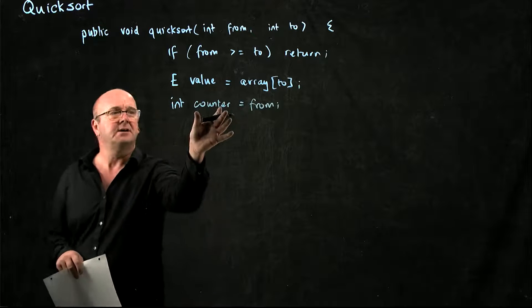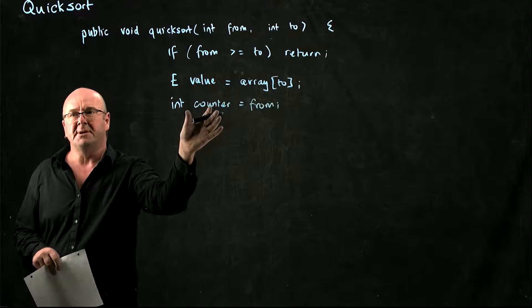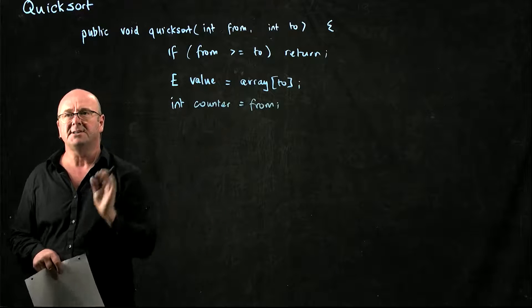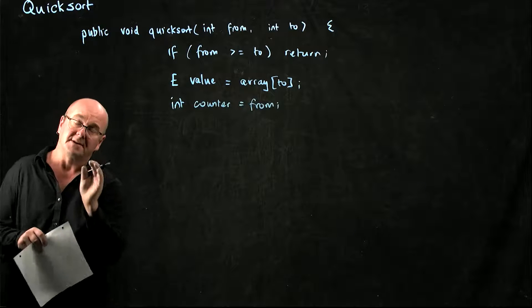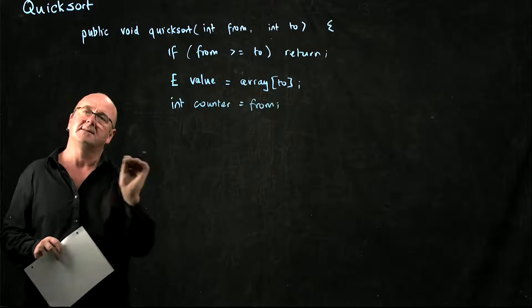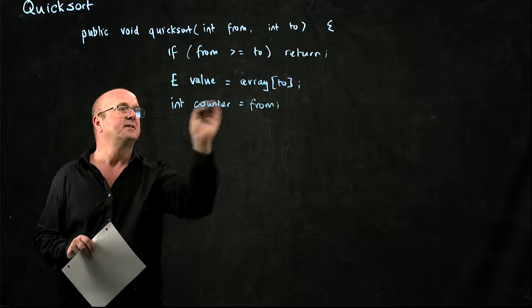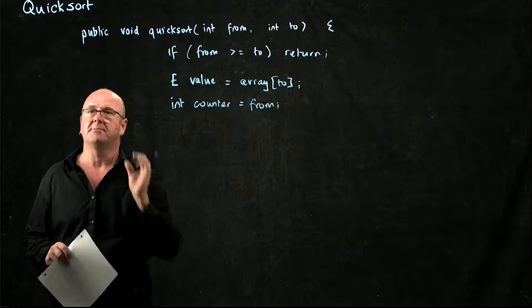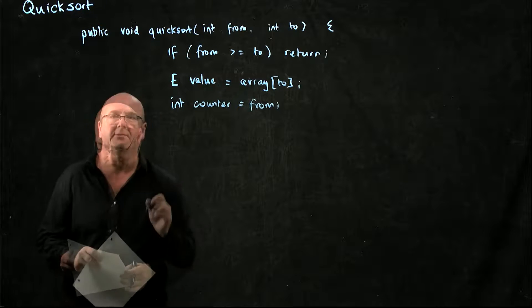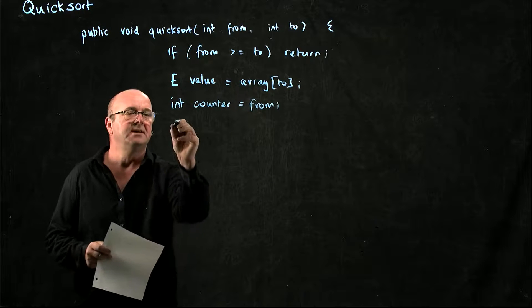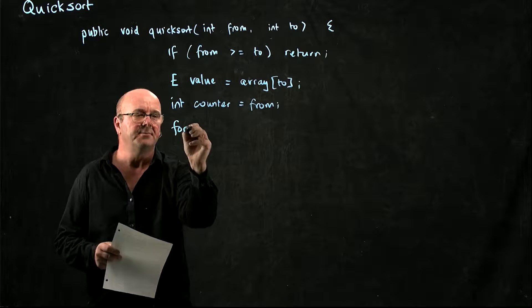The counter remembers the first thing that's larger than the pivot point. Now what I've got to do is iterate through my array.